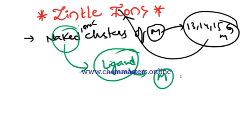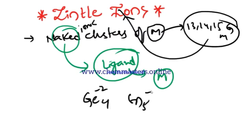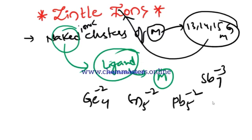Only metals are making clusters, that's why we call them naked ionic clusters. Naked ionic clusters of main group metals are called Zintl ions. Some examples are: Ge₄²⁻, Sn₅²⁻, Pb₅²⁻, and Sn₇³⁻. We can take many examples from main group metals which form Zintl ions. Our concept here is how to find the number of bonds in Zintl ions.